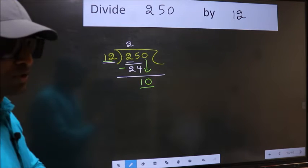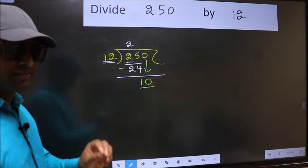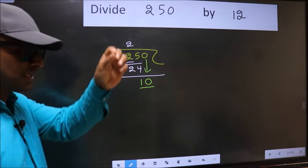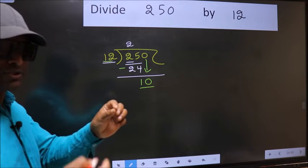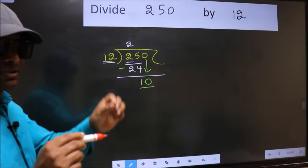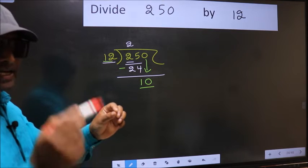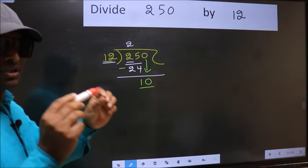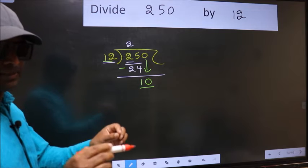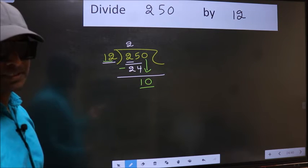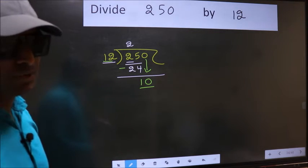Which is wrong. I repeat: bringing the number down and also put dot, take 0. Bring the number down and put dot, take 0. Both at the same step you should not do. Instead, what you should think of doing is...